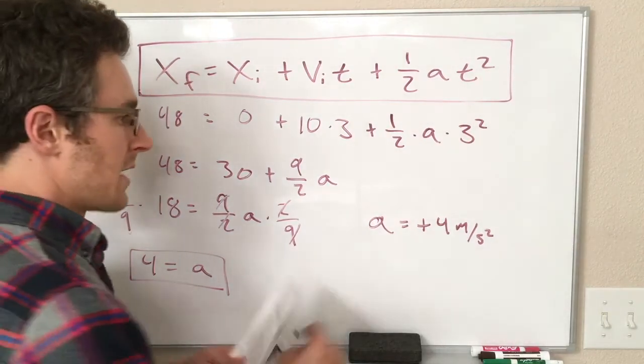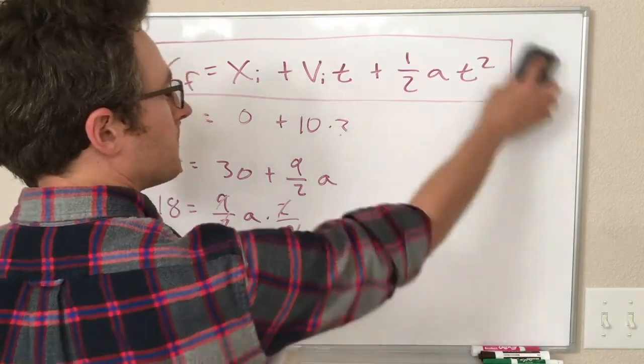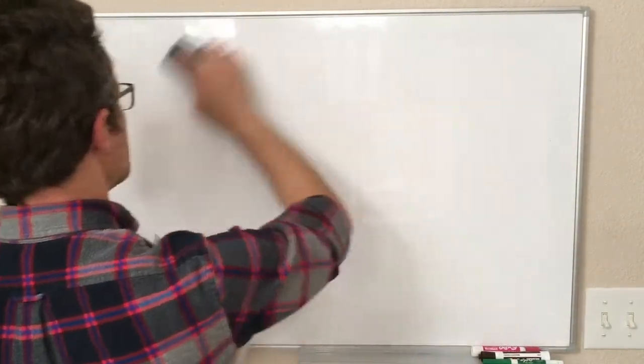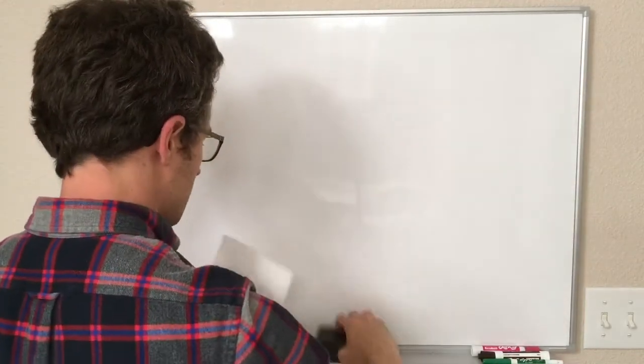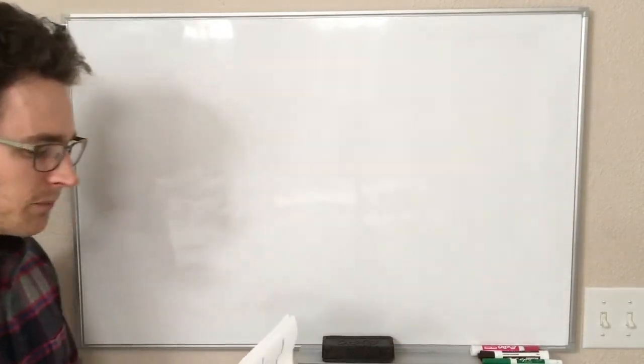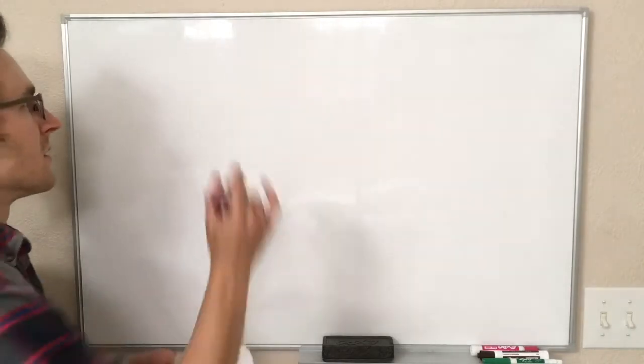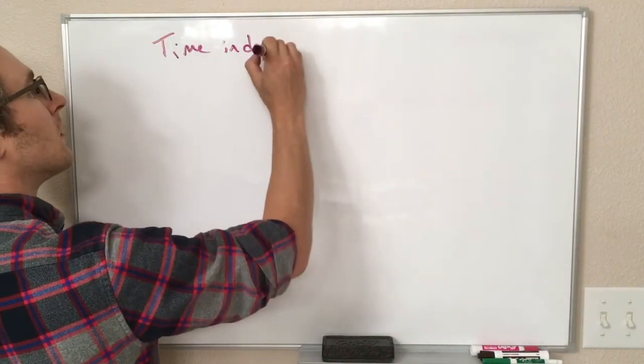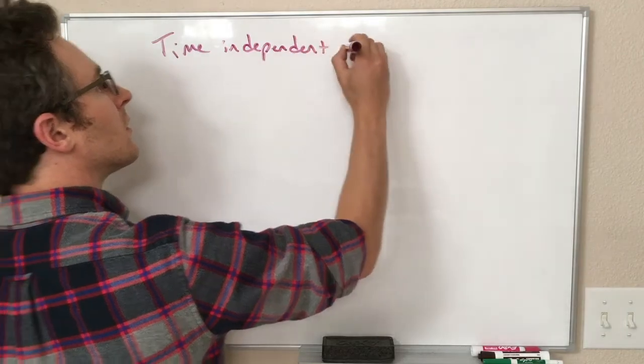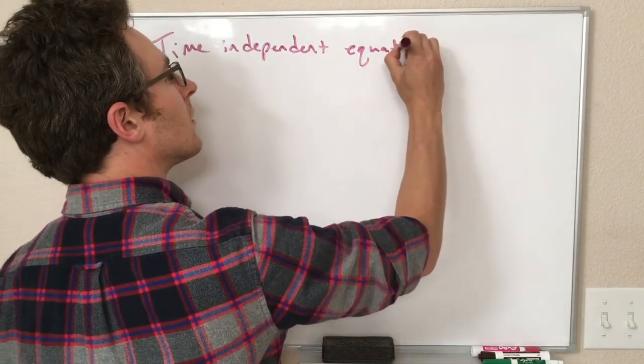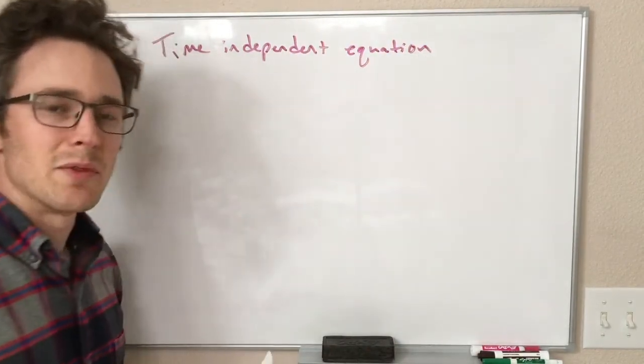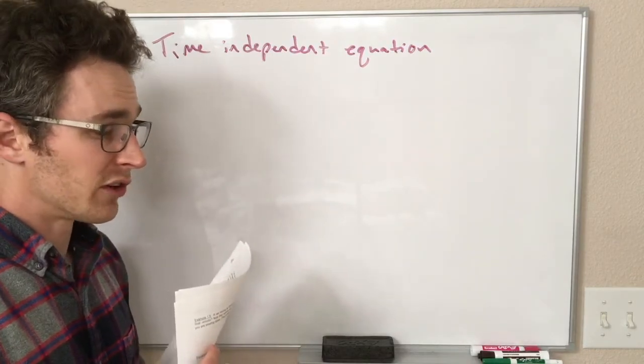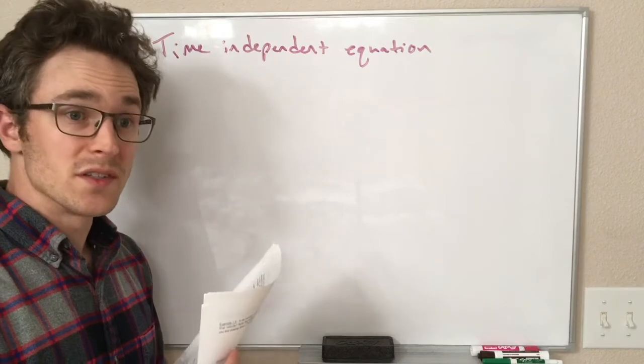Alright, there's one last kinematics equation that I want to talk about that pops up a lot, turns out to be very useful in lots of problems we do. And this one is called the time-independent equation. The reason it's called the time-independent equation is that all of our other kinematics equations have the variable time in it. This one does not.